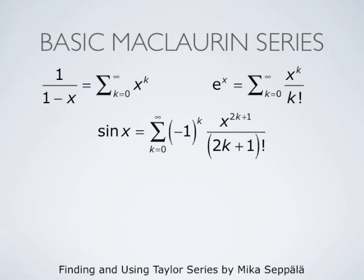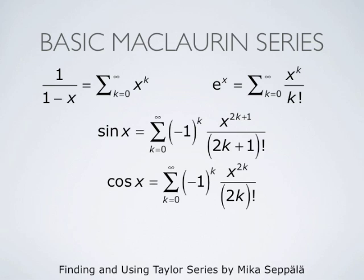The sine function is represented by the Maclaurin series summation k from 0 to infinity of x to the power 2k+1 divided by (2k+1) factorial, and this series converges and represents the sine function for all values of x. The cosine function is represented by the series summation k from 0 to infinity of negative 1 to the power k times x to the power 2k divided by (2k) factorial, and this representation is also valid for all values of x.